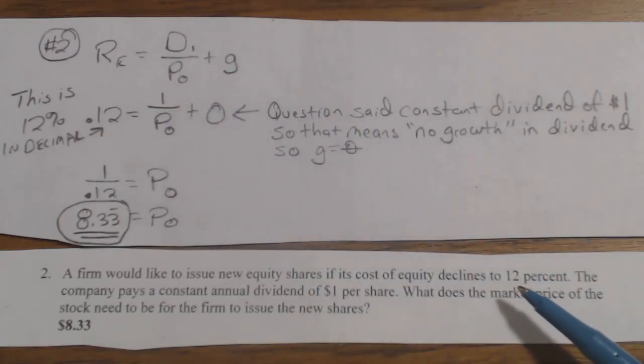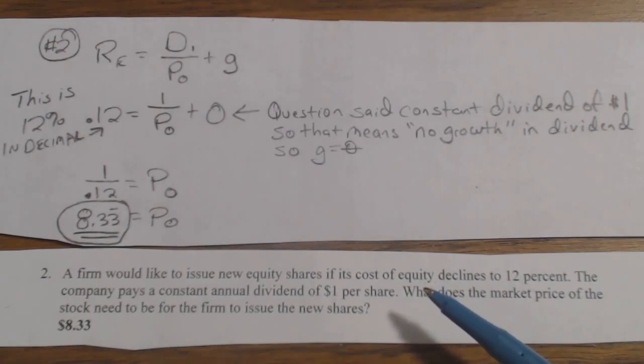RE, they're telling you in advance, is 12%. That's the cost of equity if you're the firm, the return of equity if you're the investor, the person that owns the stock. Declines to 12%, which means